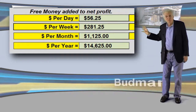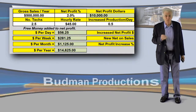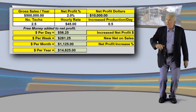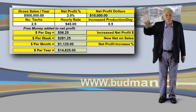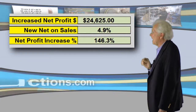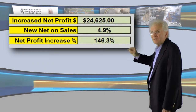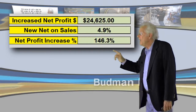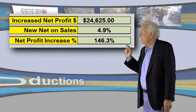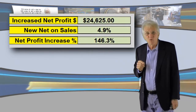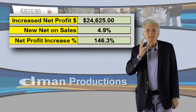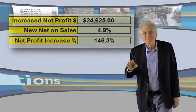Let me tell you about that $14,000 — it's absolutely free money. Think about this: you've already paid for your overhead, so anything you earn above that is free. It's pure profit. You have a net profit increase from $10,000 to $24,625 per year. Your net profit percent goes from 2% up to 4.9%, and you have a net profit increase of 146.3%. Again, this is a free increase — your overhead's already paid for.